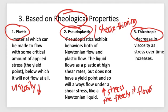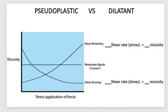The counterpart of pseudoplastic gels — which are called shear thinning — is dilatant, also known as shear thickening.